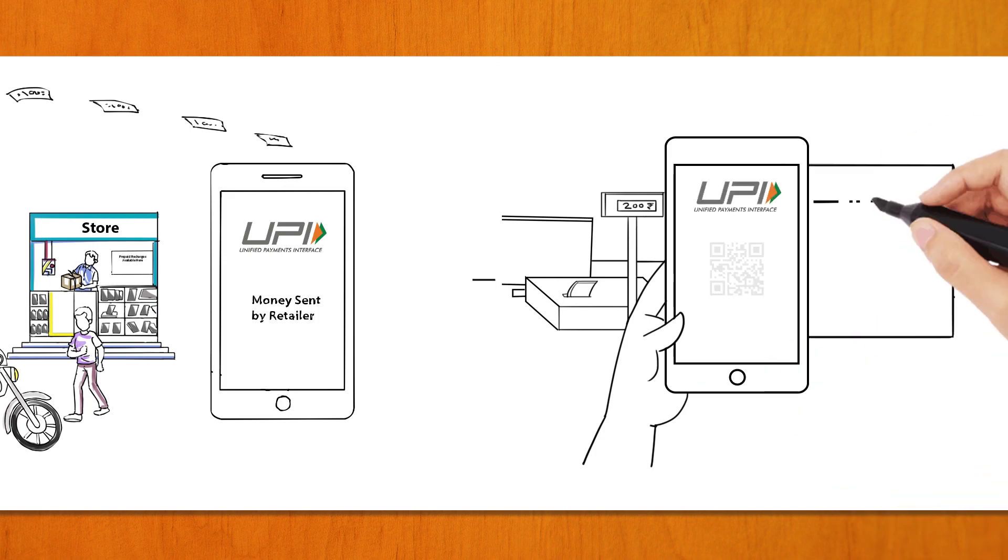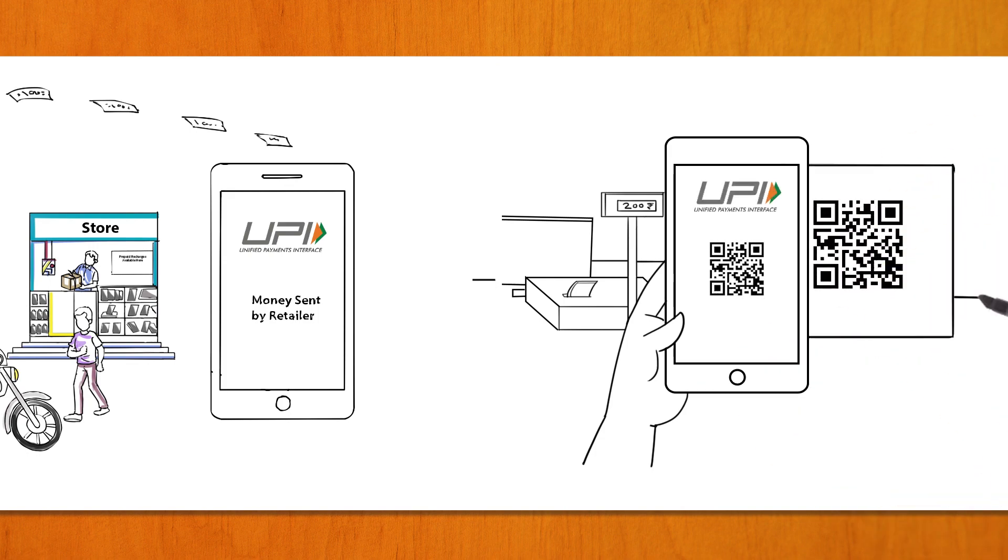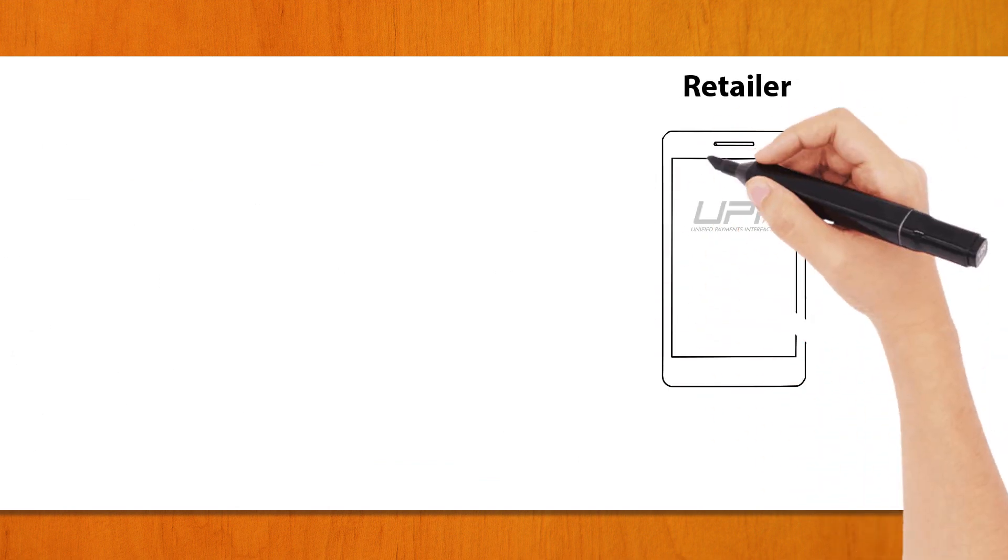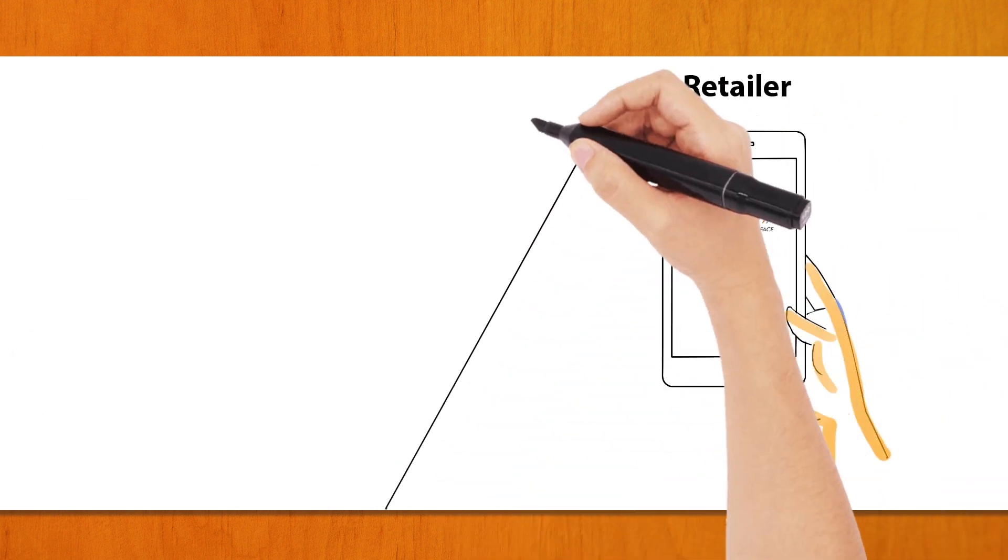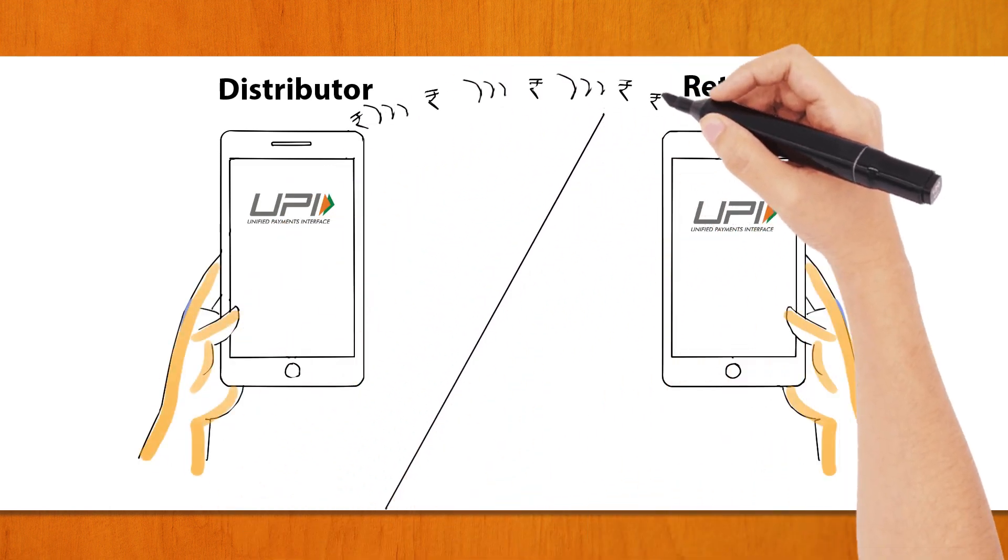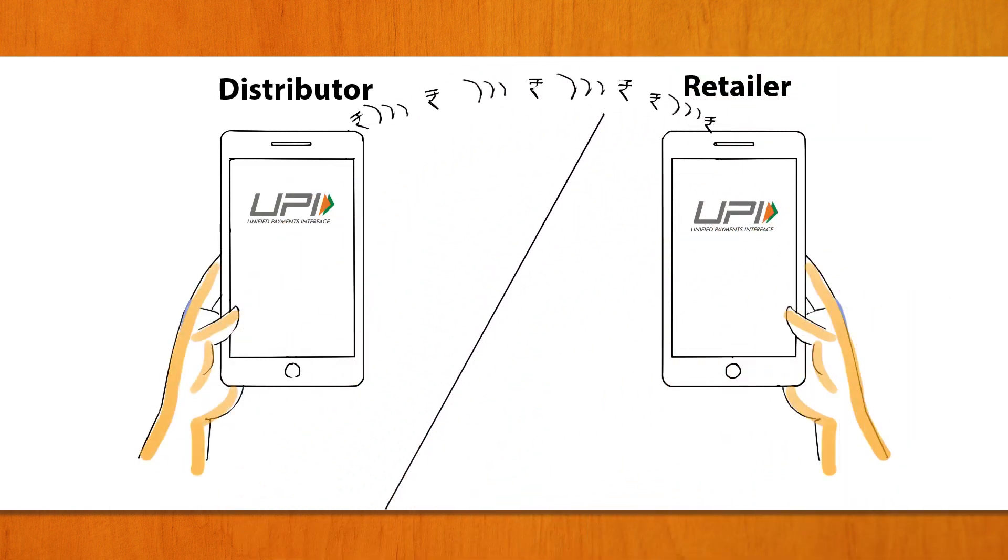Consumers can also pay by scanning the UPI QR and pay the retailers for purchases. The retailer can also pay for recharges by requesting the distributor to send a collect request through the retailer UPI ID against the recharges required.